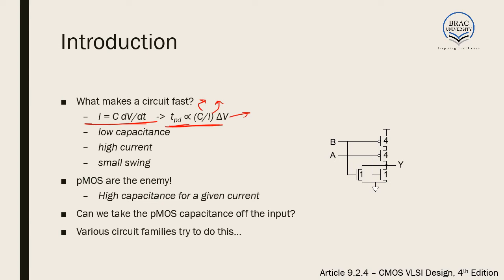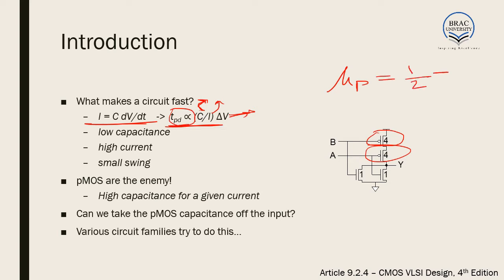So if we decrease the change in voltage, the propagation delay will decrease. We want the propagation delay to be minimum. We can either decrease the capacitance or voltage swing, or increase the current. Decreasing capacitance becomes problematic because of the PMOS present here. PMOS is our real enemy. We know that μ_p is almost half to one third of μ_n.